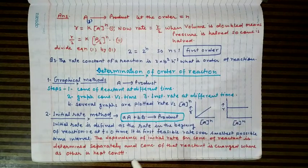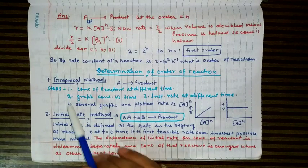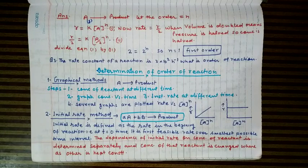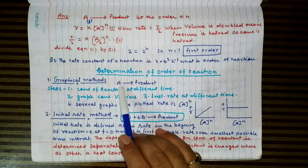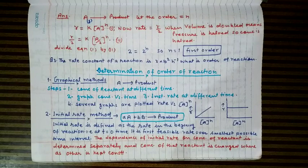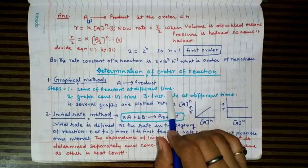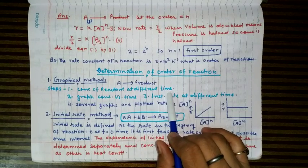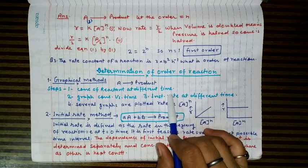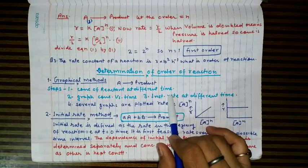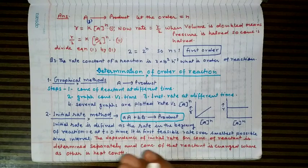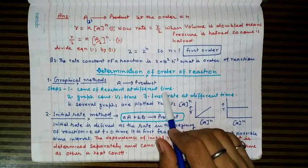Now we will discuss the determination of order of reaction. There are different methods: the graphical method, the initial rate method, and the integration rate equation method. In the graphical method, consider reaction A → product. The first step is to determine the concentration of reactant at different times by measuring a property directly related to concentration, such as optical rotation, color intensity, or titration.